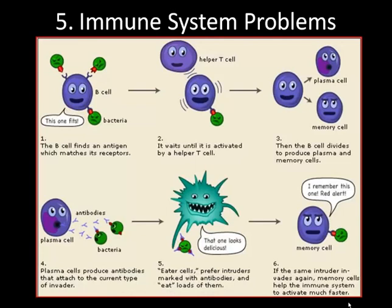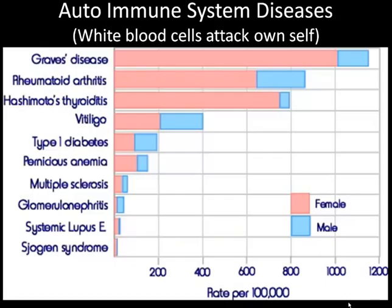Then we have some types of immune system problems. Autoimmune diseases occur when white blood cells attack the body itself. On the diagram we have several forms of autoimmune disease — for some reason the white blood cells don't recognize their own cells and they attack and destroy them. Type 1 diabetes is one example: when the baby is born, white blood cells attack the pancreas and the pancreas can no longer produce insulin.